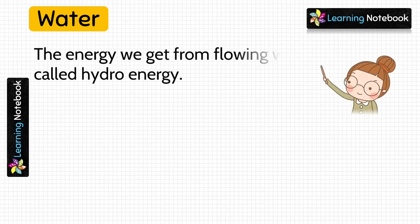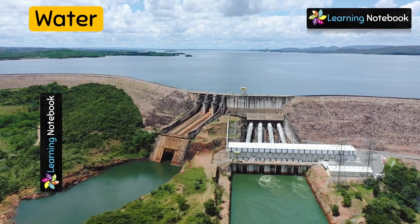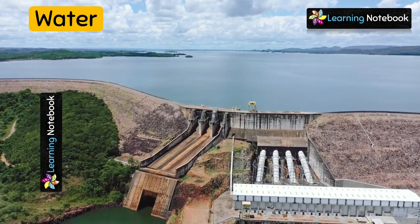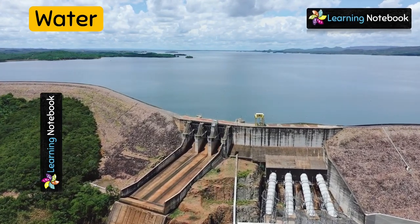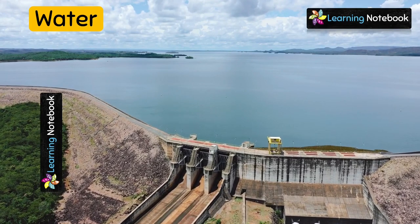The next source of energy is water. The energy we get from flowing water is called hydro energy, and hydro energy is used in generating electricity in hydroelectric power plants. The energy of falling water from a dam is used to move the turbines of a generator to produce electricity.